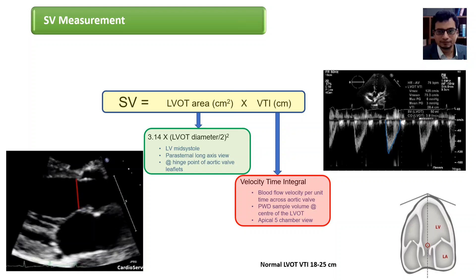For VTI measurement, two or three cardiac cycles should be averaged for a patient in sinus rhythm and five to seven for a patient in atrial fibrillation.